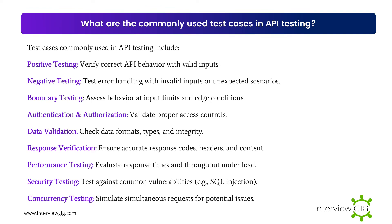What are the commonly used test cases in API testing? Test cases commonly used in API testing include: positive testing — verify correct API behavior with valid inputs; negative testing — test error handling with invalid inputs or unexpected scenarios; boundary testing — assess behavior at input limits and edge conditions; authentication and authorization — validate proper access controls.